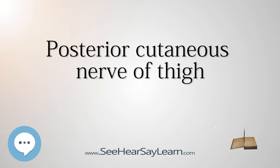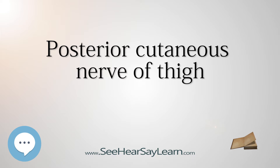Branches. Its branches are all cutaneous, and are distributed to the gluteal region, the perineum, and the back of the thigh and leg. The inferior clunial nerves, or gluteal branches, three or four in number, turn upward around the lower border of the gluteus maximus, and supply the skin covering the lower and lateral part of that muscle. The perineal branches are distributed to the skin at the upper and medial side of the thigh.